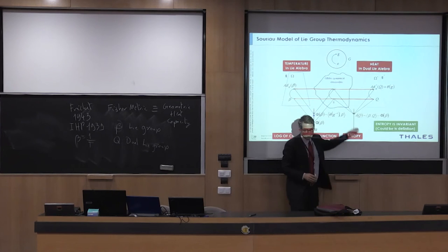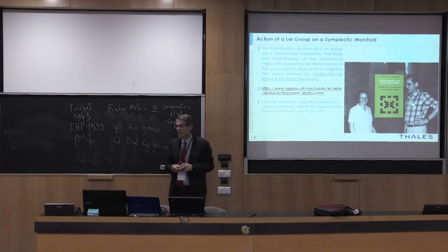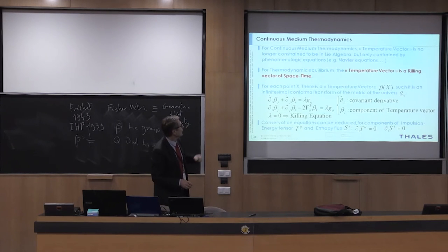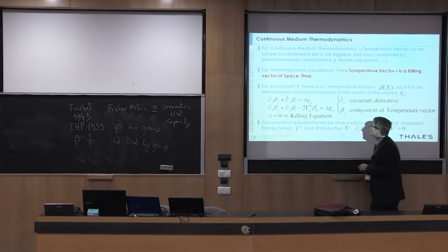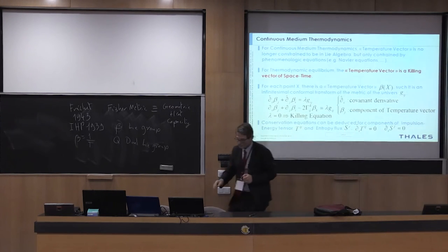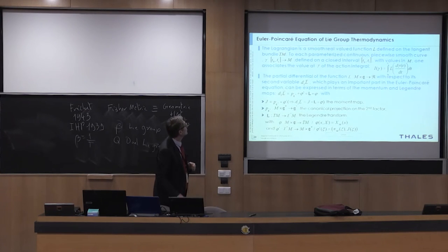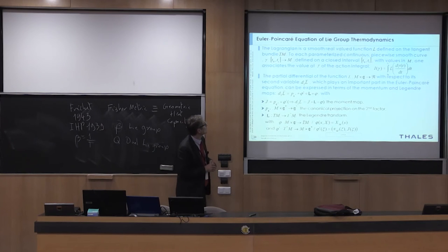So it could be also the second derivative of the entropy which is invariant. You have many details in the book of Charles-Michel Marle on Paulette Libermann. Charles-Michel Marle will give you more accurate details. I introduce another approach: continuous medium thermodynamics, where the temperature is no longer constrained to lie in the Lie algebra, but the thermodynamic vector is the Killing vector of space-time. We consider the action of the group on the thermodynamic manifold. In this case you can reduce the Lagrangian to the Lie algebra, using the notation of Charles-Michel Marle.